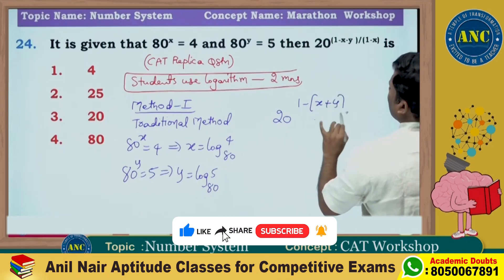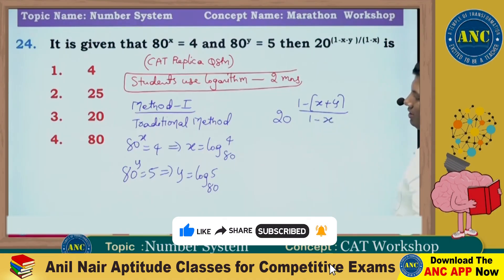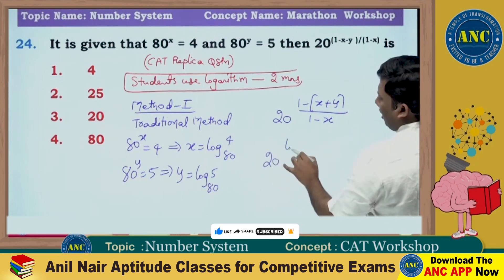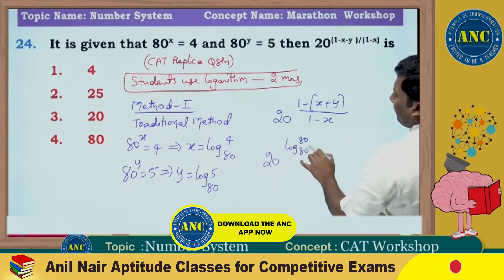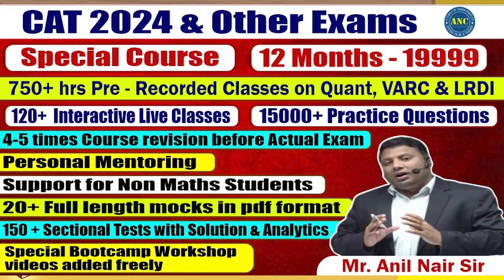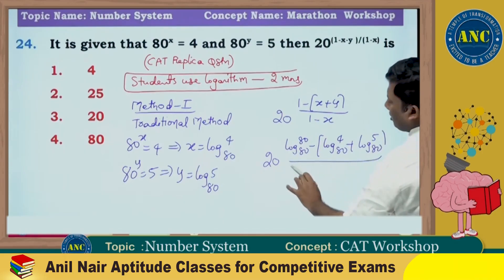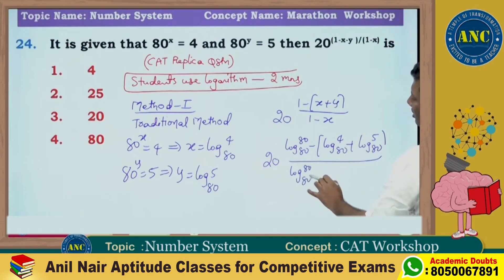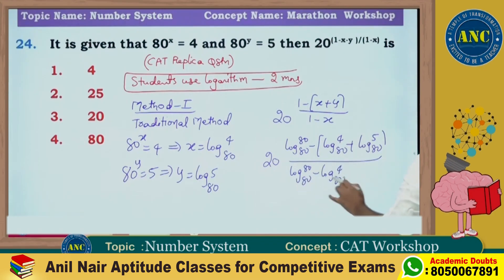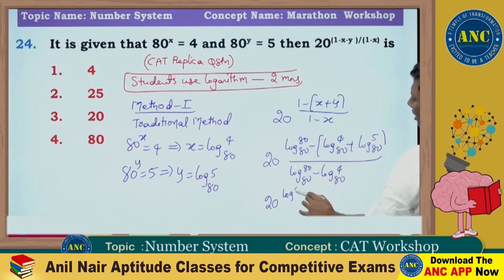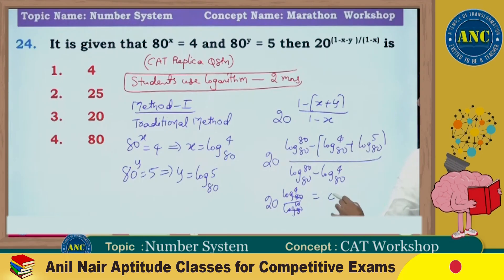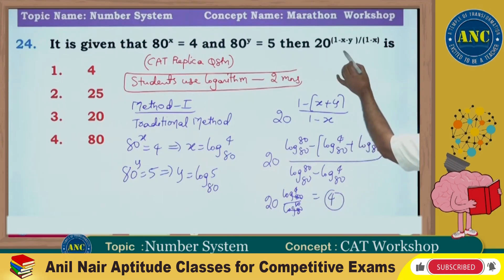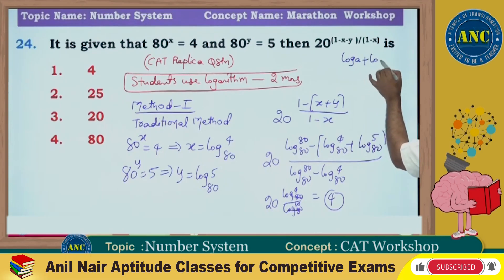The question asks for 20^((1 - x - y) / (1 - x)). So: 1 minus x minus y becomes log 80 base 80 minus log 4 base 80 minus log 5 base 80, which gives log(80/20) base 80 = log 4 base 80, divided by log 20 base 80. The answer is 4.